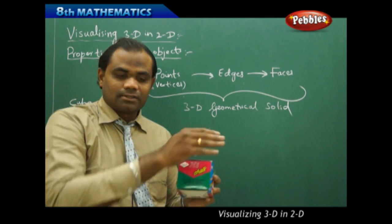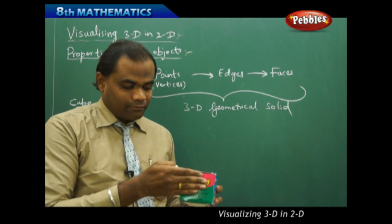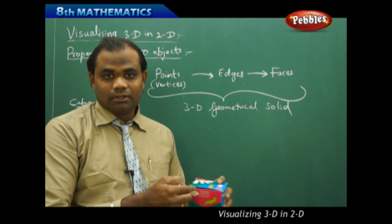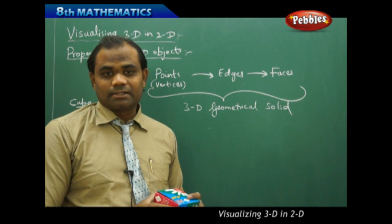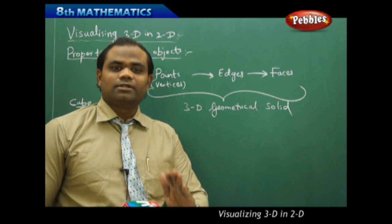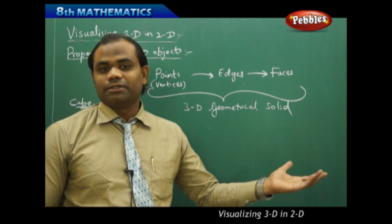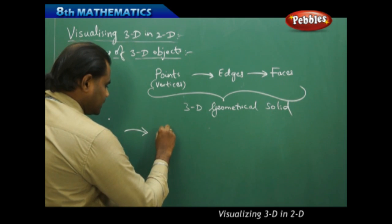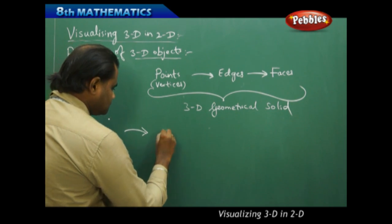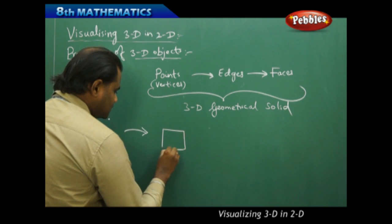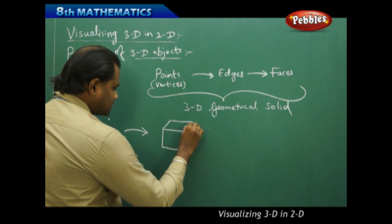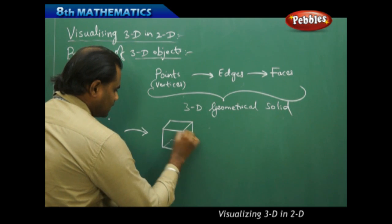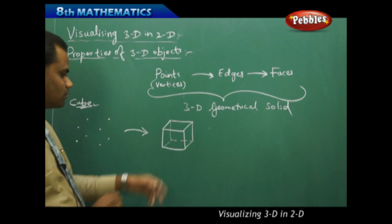Each edge is obtained by connecting adjacent end points. Edge is the junction where the face of the cube turns — it is the junction where the face of the three dimensional geometrical solid changes its direction. So I have twelve edges total — one, two, three, four, five, six, seven, eight, nine, ten, eleven and twelve.